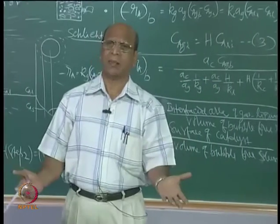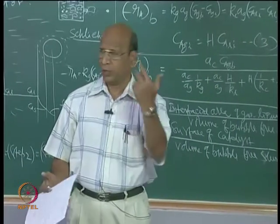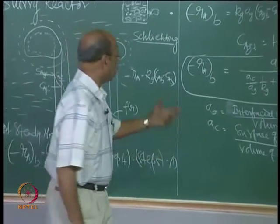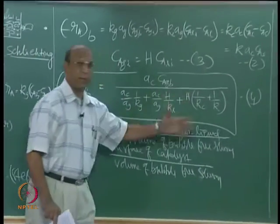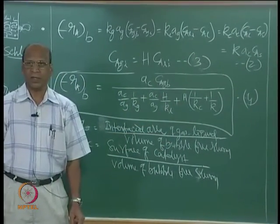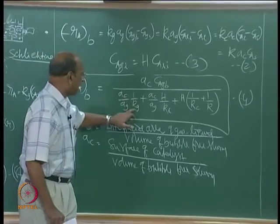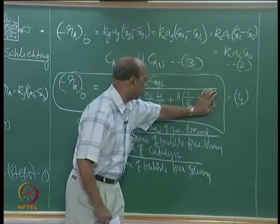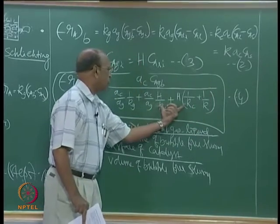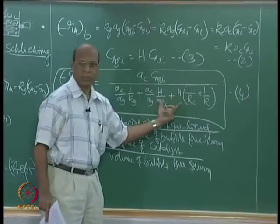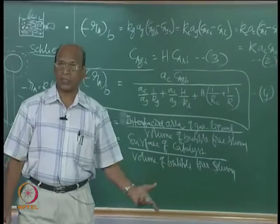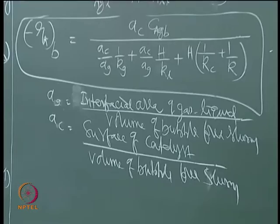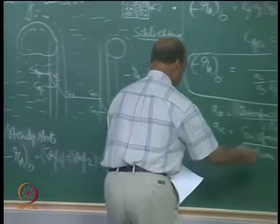Diffusion in very small pores inside a particle is slowest. So you need to know which terms are important and which are unimportant. When K_g is very large, 1/K_g goes to zero. When you have a very active catalyst, 1/K goes to zero. Then you are left with only two mass transfer coefficients - reaction disappears, and the system is mass transfer limited.